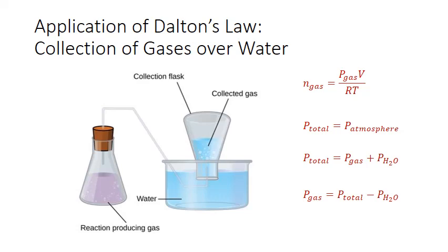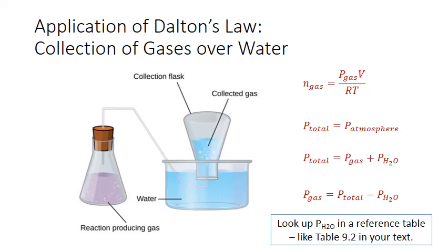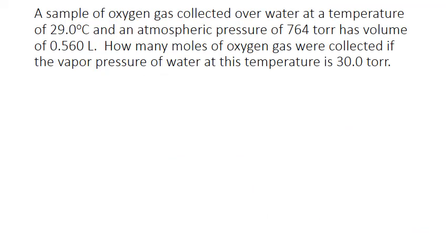Luckily, measurements of vapor pressure due to water at different temperatures are well tabulated and can be looked up in reference tables like Table 9.2 in your text. Let's look at an example calculation of the moles of gas collected over water using the vapor pressure of water. A sample of oxygen gas collected over water at 29.0 degrees Celsius and an atmospheric pressure of 764 torr has a volume of 0.560 liters.